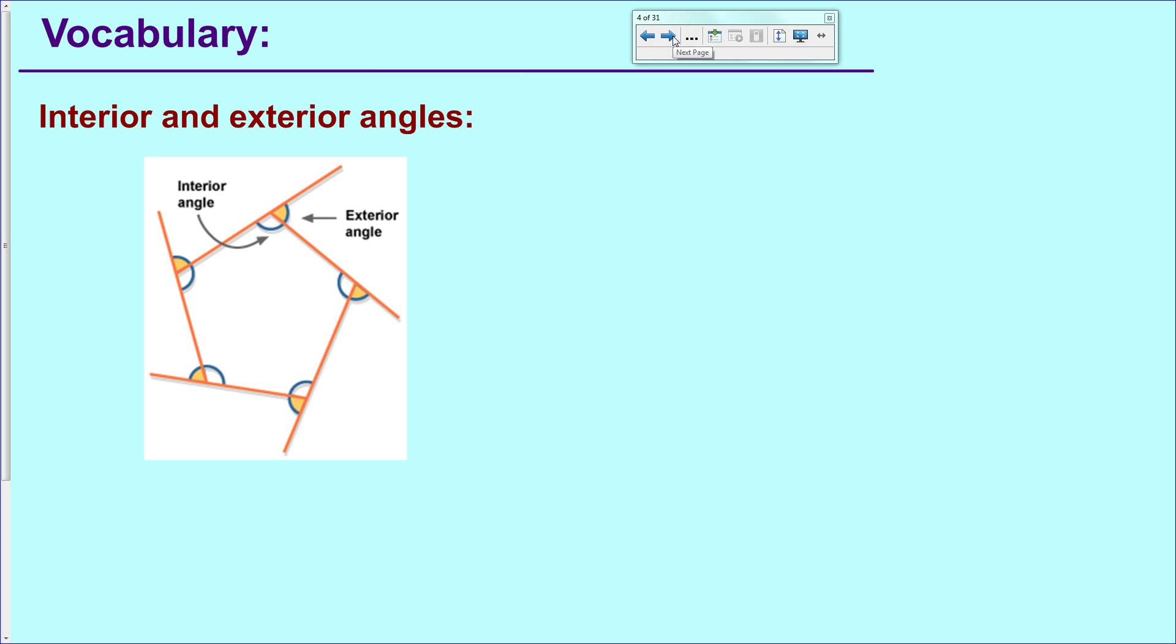The next vocabulary word, there is a word definition in the book if you're interested, but I think this picture says everything that you need to know. The interior angle of a polygon are the angles on the interior of the shape. The exterior angles, which are slightly more complicated, come about from extending one side of a polygon, and that supplementary angle to the interior angle is the exterior angle.